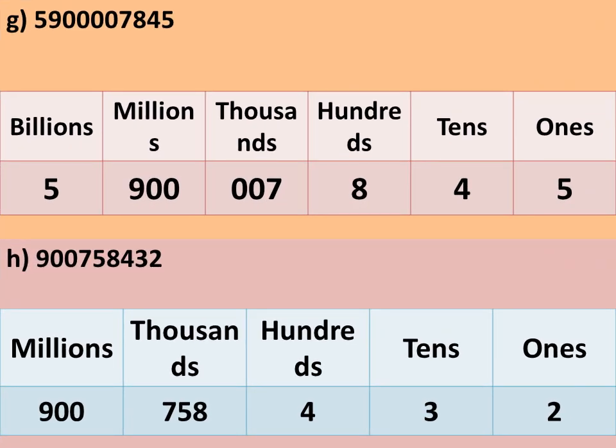Now the last three numbers use the international method of place value: billion, million, thousand, hundred, tens, ones. The number is 5,900,007,845. Counting from the right: ones is 5, tens is 4, hundreds is 8, thousands is 7, ten-thousands is 0, hundred-thousands is 0, millions is 7, ten-millions is 0, hundred-millions is 9, billions is 5.